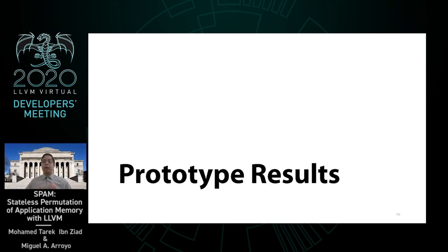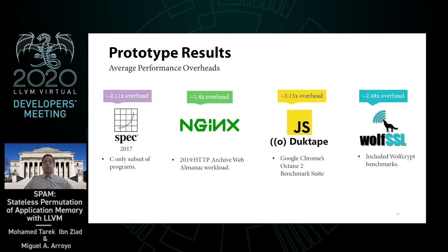Now let's look at some preliminary results to see where the current software prototype stands in terms of performance. We tested SPAM on a diverse set of C benchmarks including the standard SPEC 2017 benchmark suite, for which our LLVM-based prototype has a 2.1x slowdown. Moving on to more real-world applications, we evaluate Nginx — one of the most popular web servers — for which we see much better performance with SPAM on the order of 1.4x. We also evaluate SPAM on DukTape, an embedded JavaScript engine, and WolfSSL, a popular lightweight cryptographic library. For all these benchmarks, we verified correctness by comparing against the reference output.